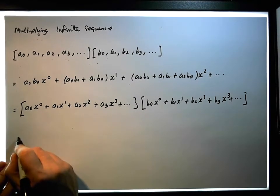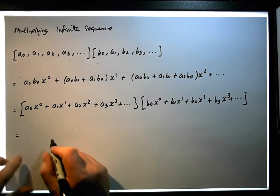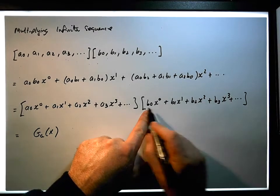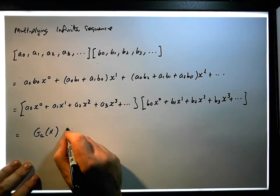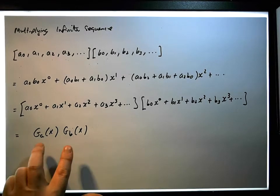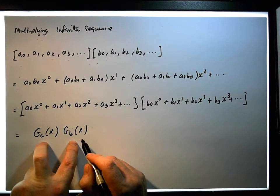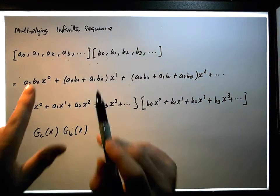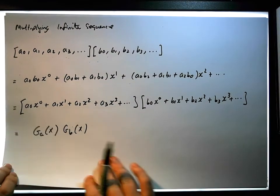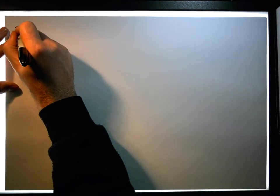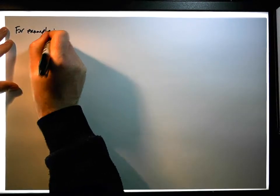Each one of them has a generating function. The generating function for the a's is ga(x), and the generating function for the b sequence is gb(x). So all we have to do is multiply the generating functions to find the generating function of the product of two sequences.